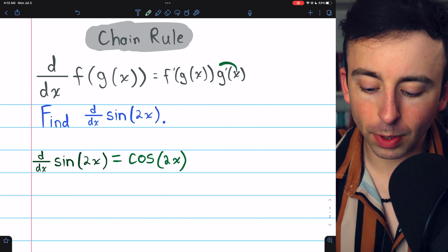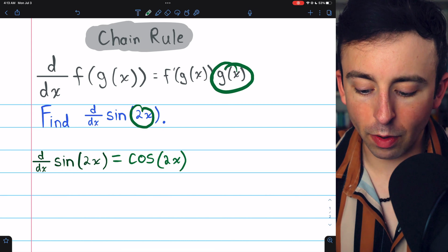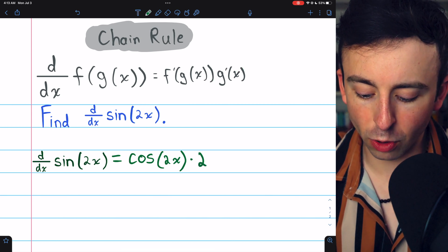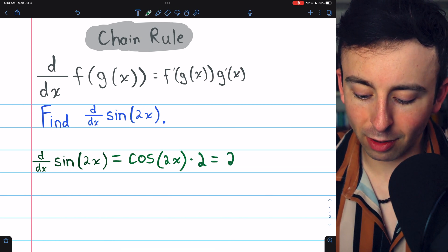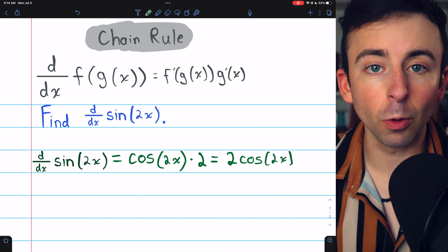Then we multiply by g prime. That's the derivative of the inside function. The derivative of 2x is just 2. We may prefer to write this as 2 times cosine of 2x, and that's our derivative.